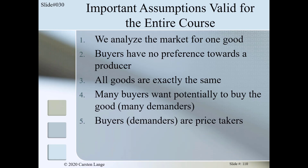In assumption number four, we assume we have many buyers — many demanders — in the market, and they all potentially want to buy the good. The fifth assumption states that buyers or demanders have to take the price as it is and decide on this basis which quantity of good they are willing to buy. If you don't believe this, try the following experiment: go to your neighborhood supermarket and try to negotiate for the price of milk. The supermarket can sell the milk to one of the other many buyers, so it does not have to negotiate with you.